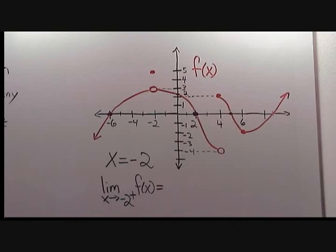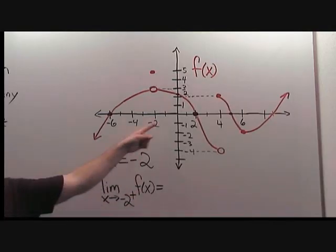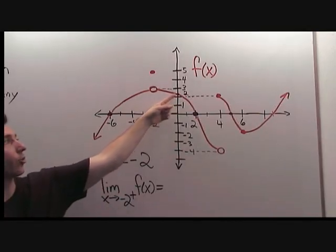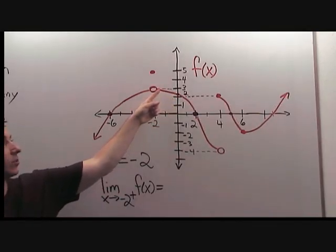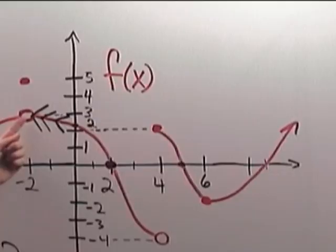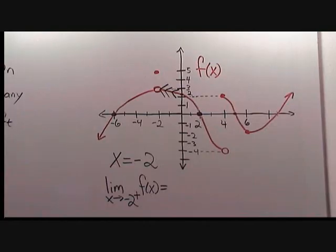Now we need to compute the limit as x approaches negative 2 from the right of f of x. To do this, we approach negative 2 from the right and walk along the graph until we get to x equals negative 2. Again, walking along the graph, we end up at this same hole and the height of this location is y equals 3. Therefore, the limit is equal to 3.